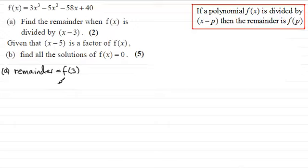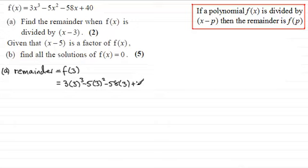All I need to do is substitute x as 3. So we have 3 multiplied by 3 cubed, minus 5 times 3 squared, minus 58 times 3, then plus 40. If you work this out on a calculator you end up with minus 98. So that's your remainder when divided by x minus 3.